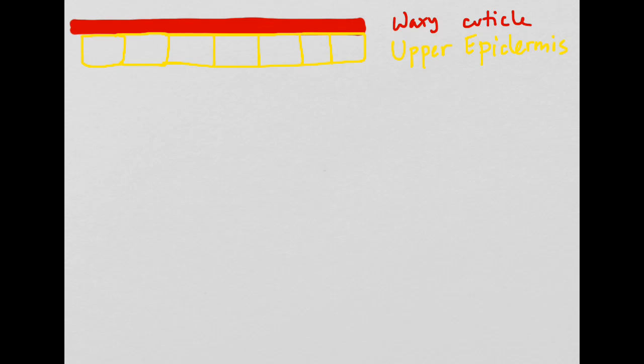Just underneath the waxy cuticle is the second layer, which is called the upper epidermis. The cells of the upper epidermis are very closely packed together. The upper epidermis has mostly protective functions. It allows light to come in but also prevents water loss in conjunction with the waxy cuticle.